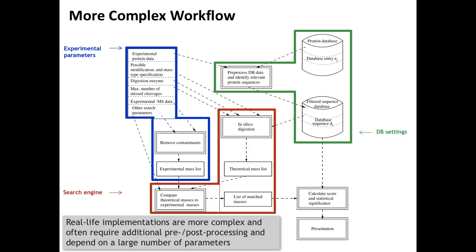The workflows in search engines are often more complex than just the core steps. You can process the database first, look at possible modifications, and handle miscleavages — peptides that are not tryptic because one cleavage site was skipped. You can also handle contaminants, like keratin spectra you'd like to remove from identification. Eventually, you also compute statistical significance and report the whole thing. That is what these search engines do for you in one go.